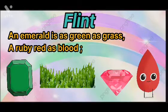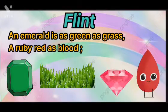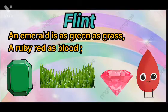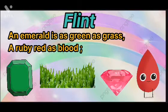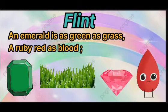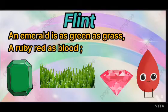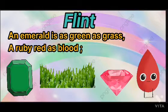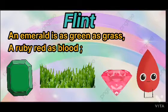Now I will explain the poem with meanings. 'An emerald is as green as grass' — the poetess has compared the green colour of the precious gemstone emerald with grass. 'A ruby red as blood' — here she compares the red colour of the precious stone ruby with the color of blood.